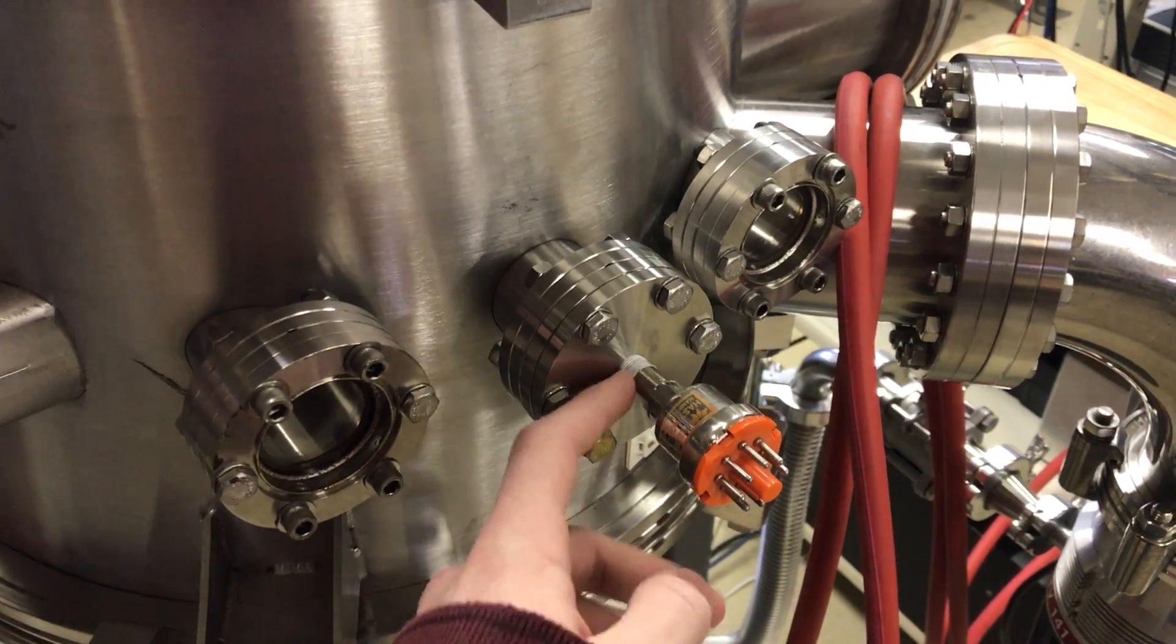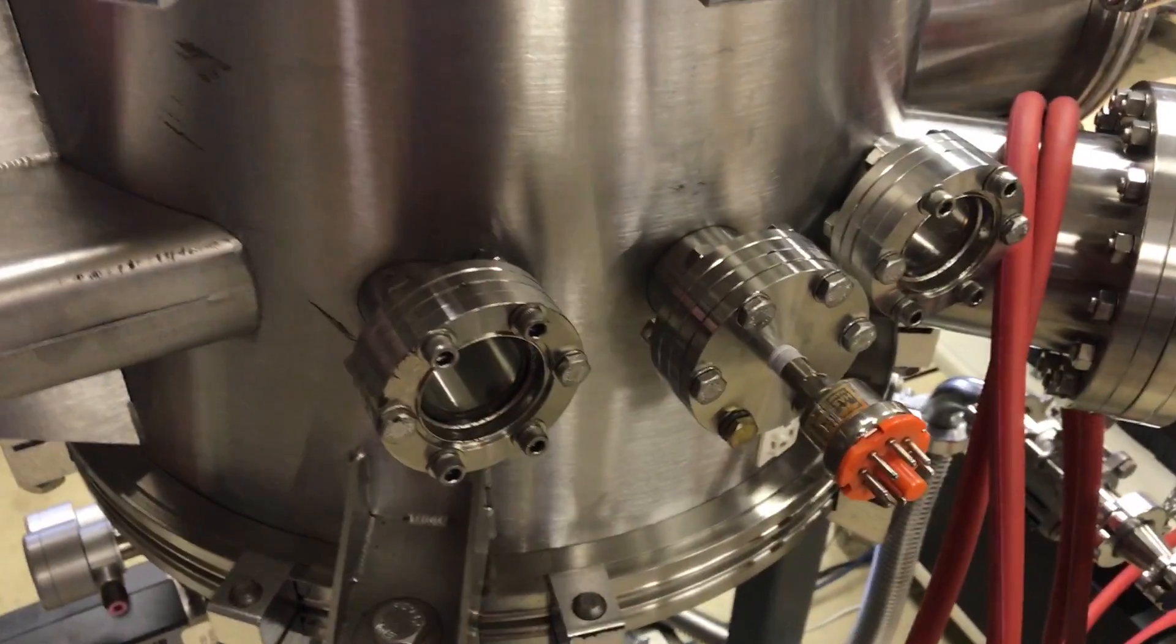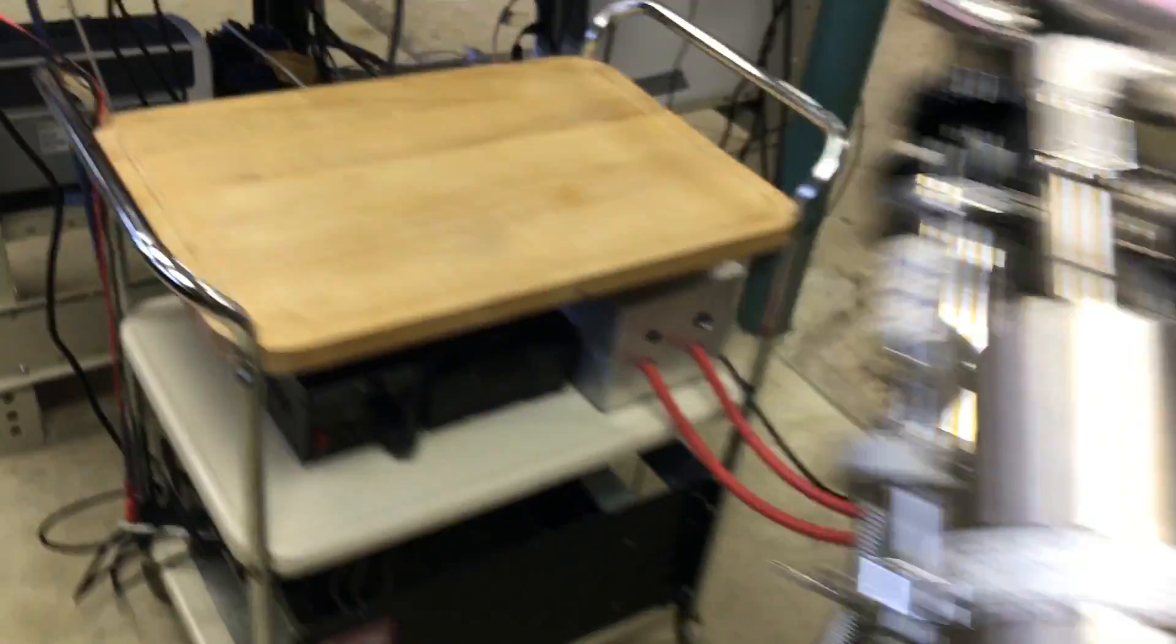NPT is not the best for high vacuum, but I mean, it's all right. As long as you use Teflon tape and have a thermocouple gauge on there. But that conflat size is quite common to see.